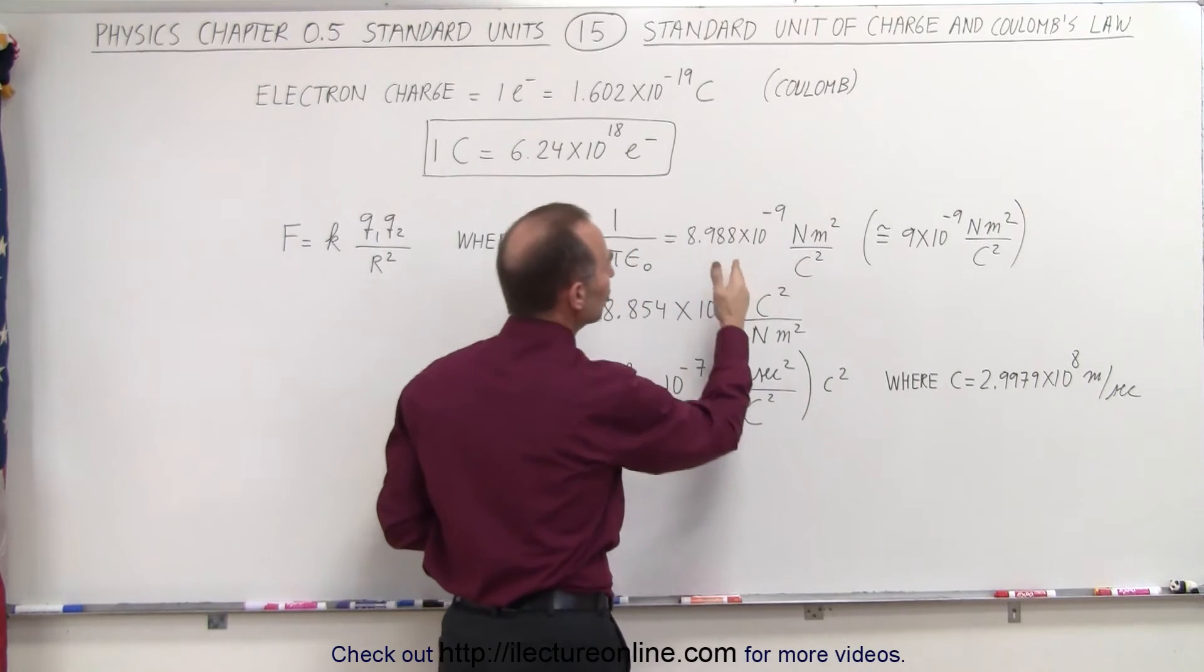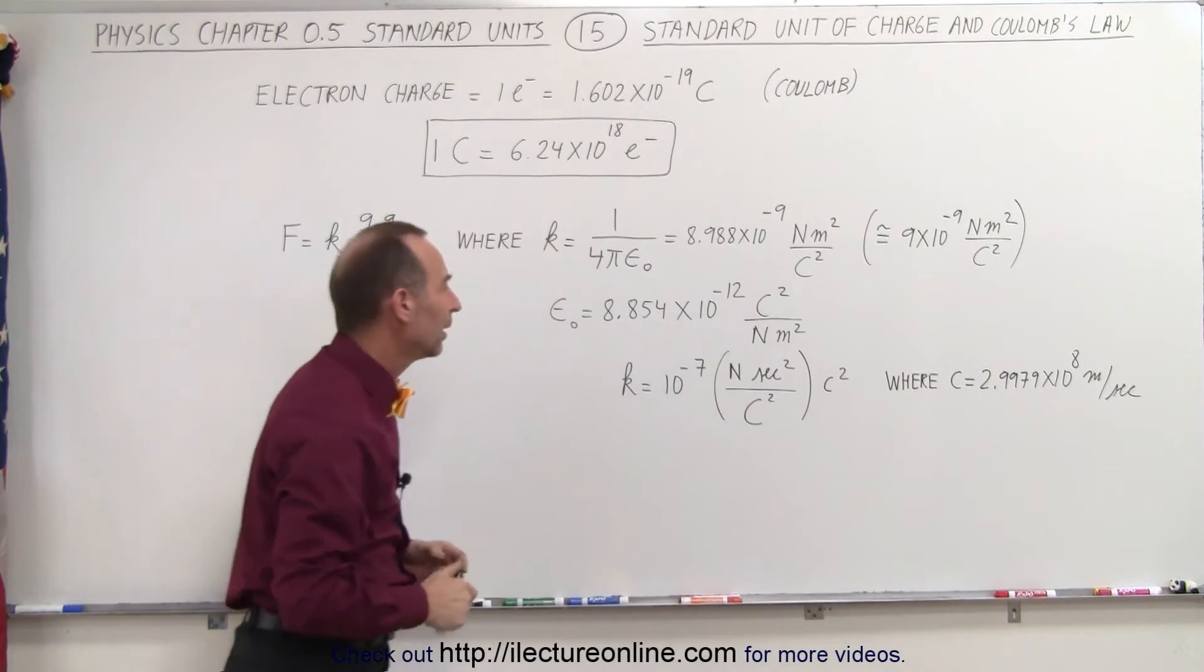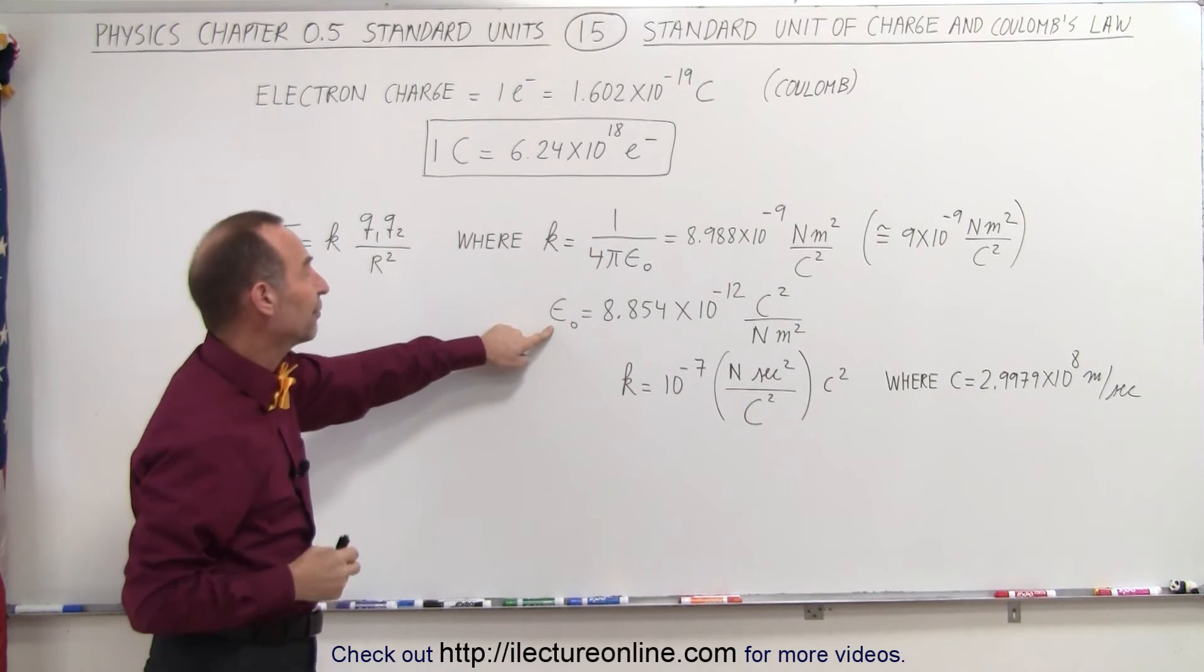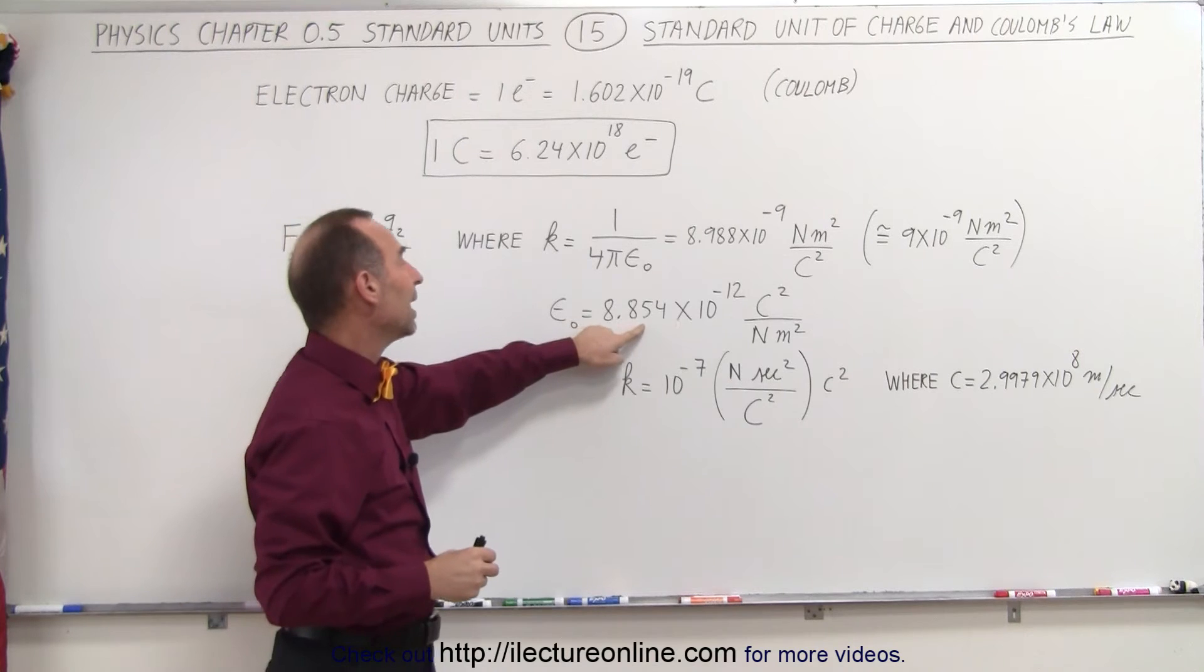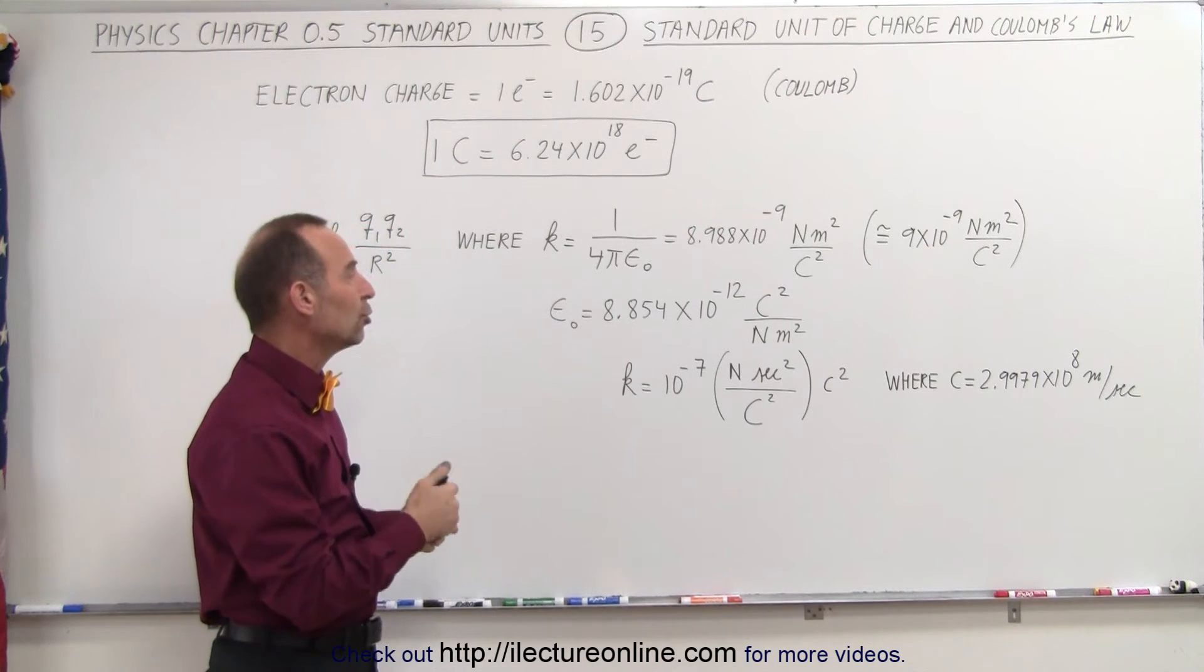If you calculate epsilon sub nought, which is called the permittivity of free space, it is 8.854 times 10 to the minus 12 coulombs squared divided by newton meter squared.